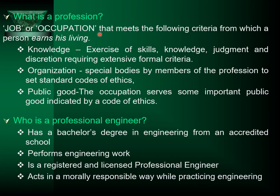What is a profession? A profession is a job or occupation that meets certain criteria from which a person earns his living. These criteria include: knowledge, exercise of skills, judgment and discretion requiring extensive formal training. Organization: special bodies formed by members of the profession to set standard codes of ethics. And public good: the occupation serves the most important public good, as indicated by a code of ethics.